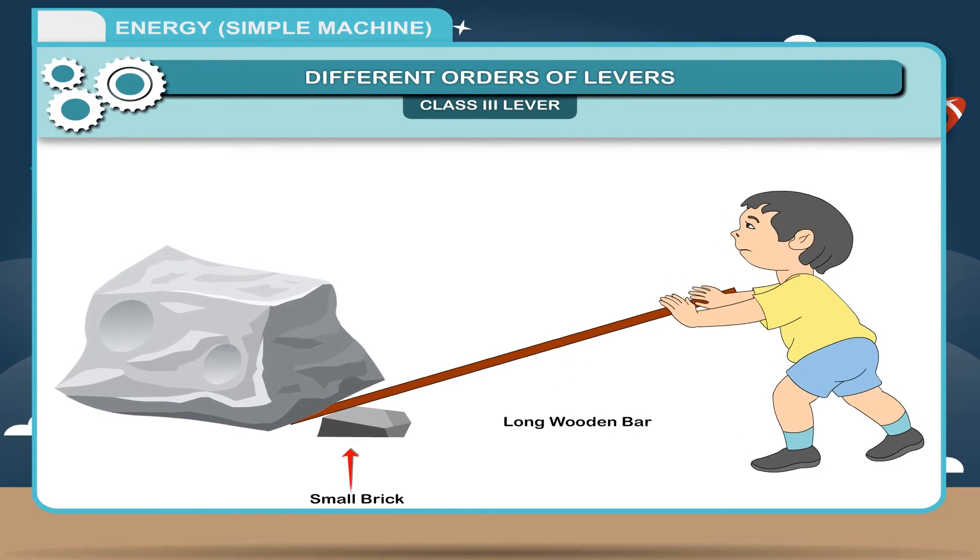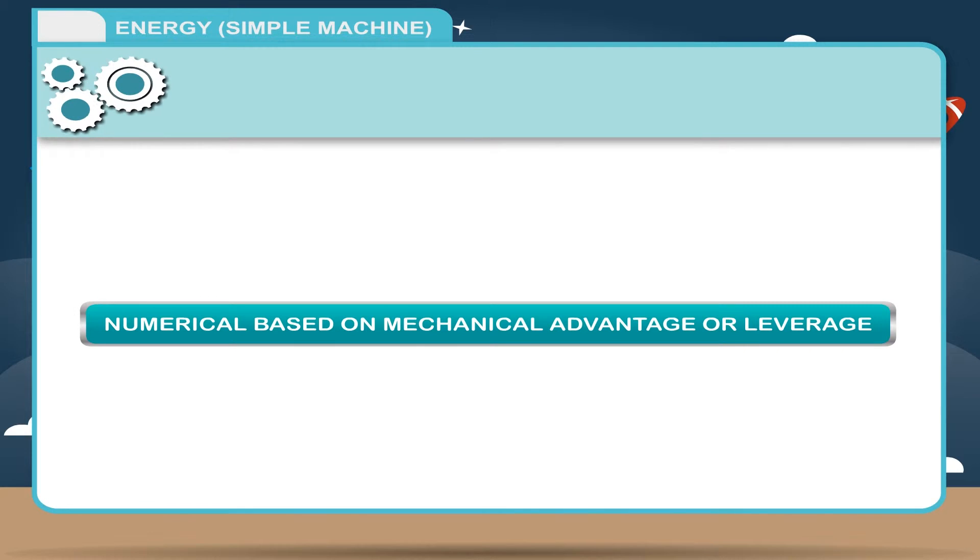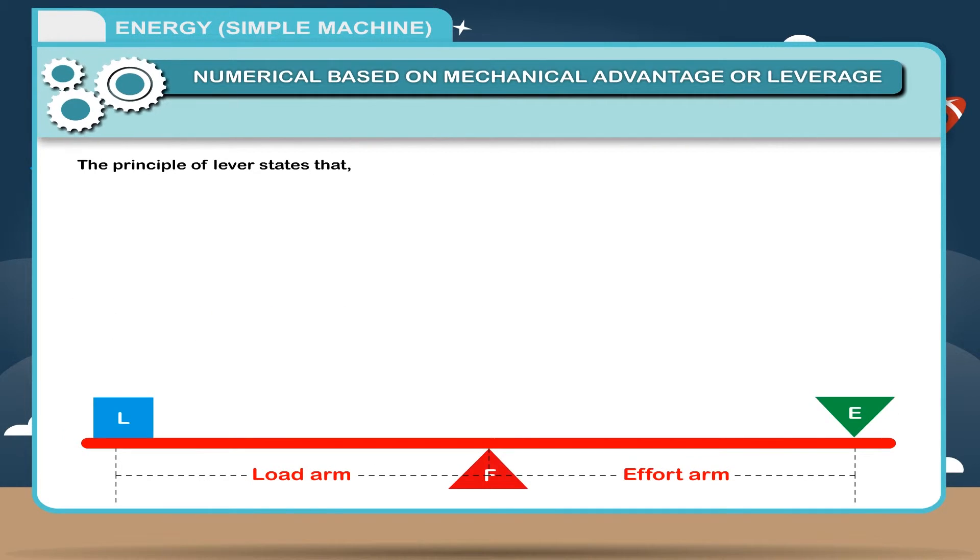Numerical based on mechanical advantage or leverage. The principle of lever states that load into load arm is equal to effort into effort arm. We know that mechanical advantage is the ratio of load to the effort.